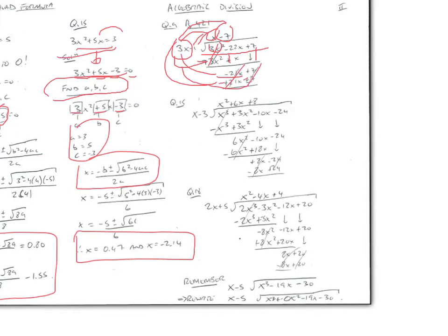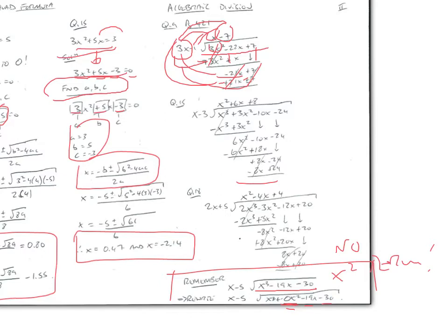It's the same principle for all division problems. But remember — it's very important — if you're faced with a problem like (x-5) dividing into x³-19x-30, note that there's no x² term. So we need to add one in by rewriting it as x³+0x²-19x-30. If you're missing an x² term or an x term, just add in +0x² or +0x before you attempt the algebraic division.